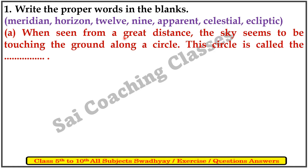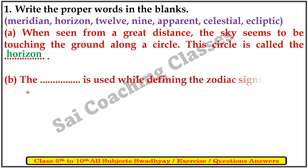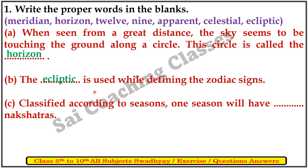A. When seen from the great distance, the sky seems to be touching the ground along the circle. This surface is called the horizon. B. The Ecliptic is used when defining the zodiac sign.